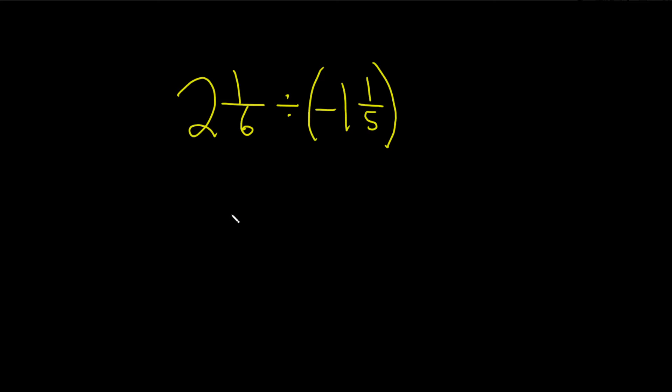2 and 1/6 divided by negative 1 and 1/5. So we have two mixed numbers and we're dividing them. The very first step is going to be to turn these mixed numbers into improper fractions. So let's do it.